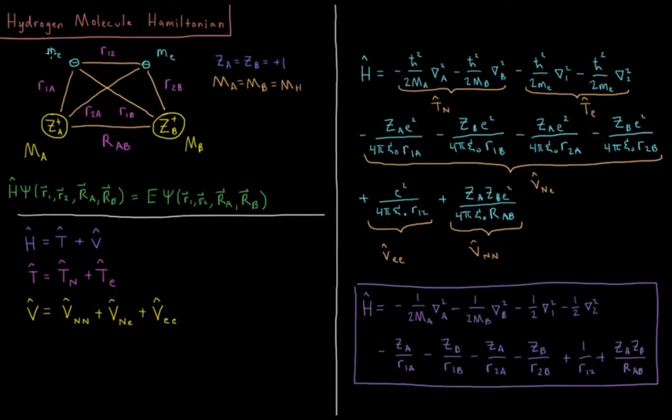We've got two electrons here. Each of them weighs mass of the electron, has a charge of negative E. And so of these four particles, we have kinetic energy for each of them, which is of interest.